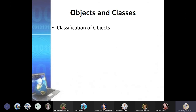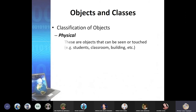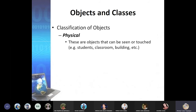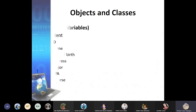First, we'll be identifying the classification of objects. There are actually two types of objects. We have physical objects — these are objects that can be seen or touched, for example: student, classroom, building, etc. Then we have conceptual objects — these are things you cannot touch. Similar to the hardware and software distinction. Conceptual objects include courses, department, degree, and so on.